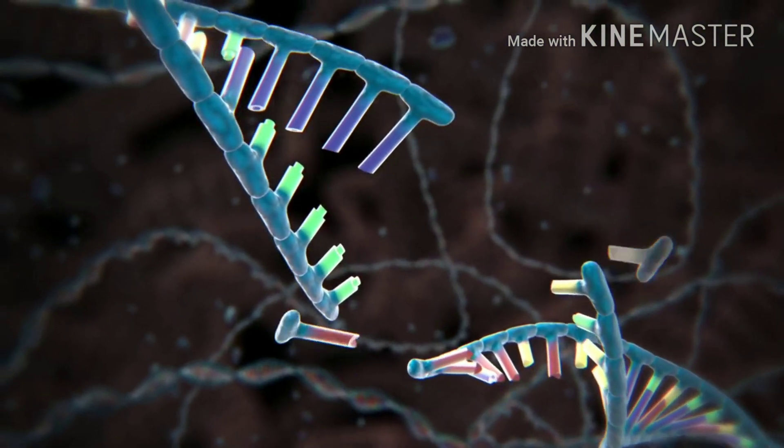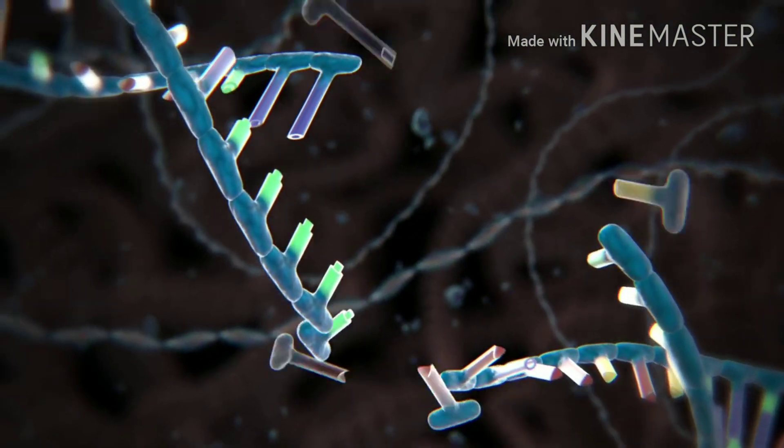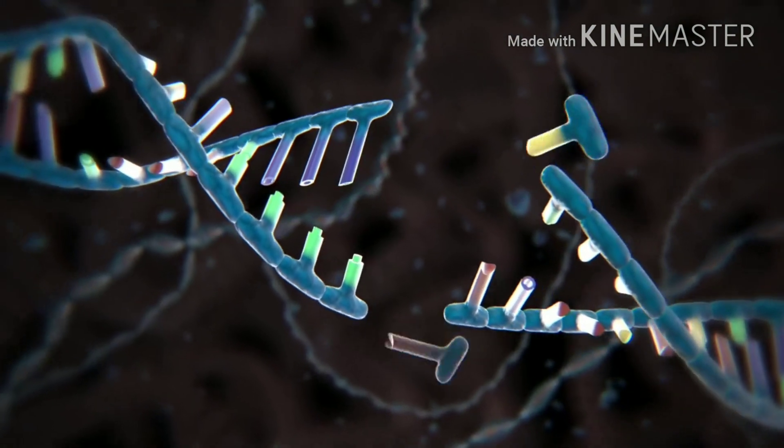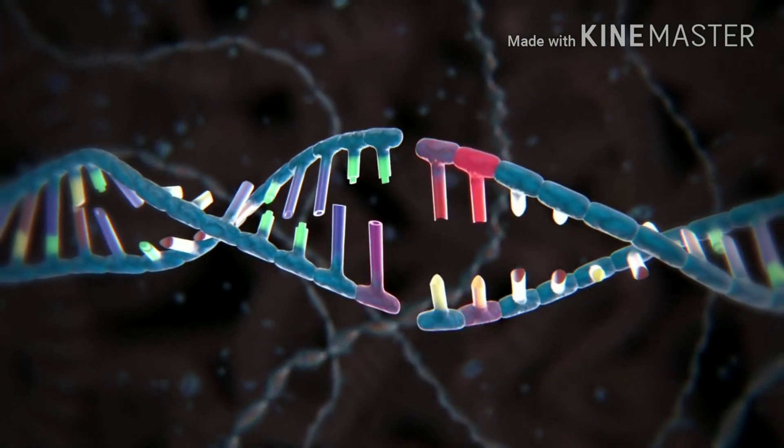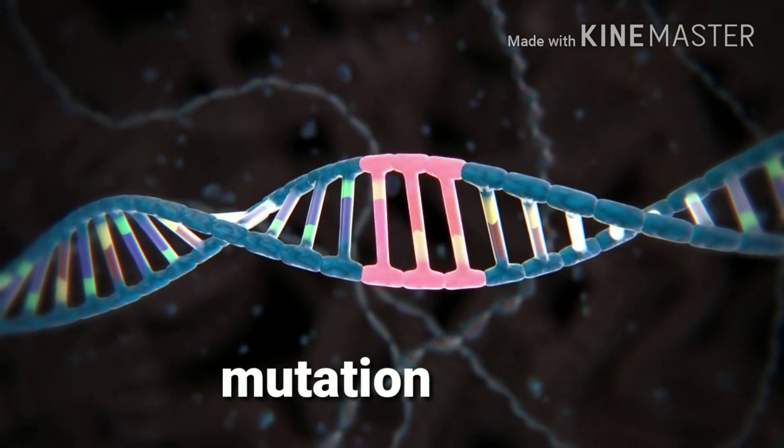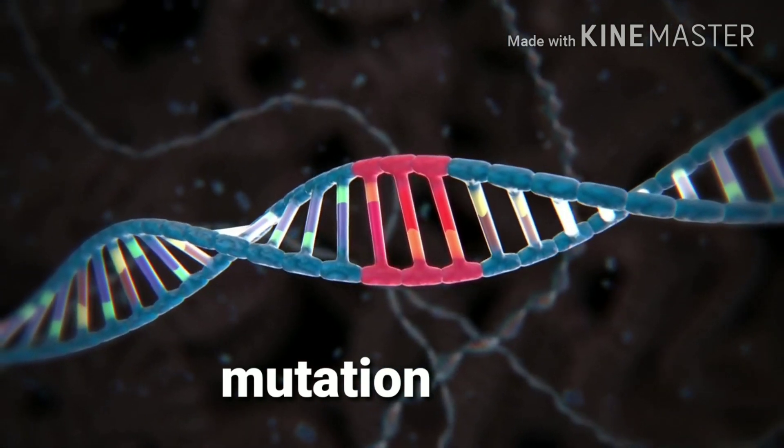Now the cell's repair mechanism tries to fix it by introducing mutations or other changes. There are two ways this can happen. One involves gluing the two cut back ends together but tends to introduce errors.